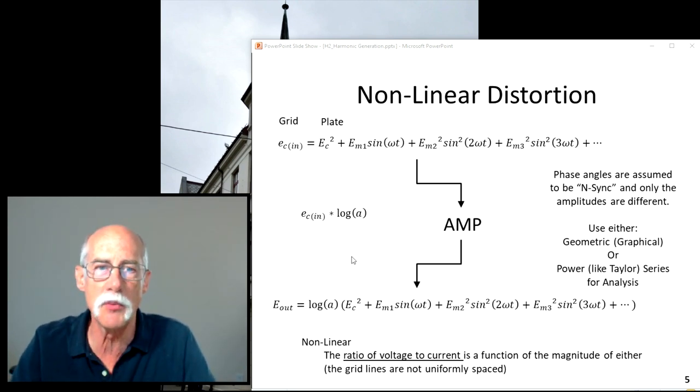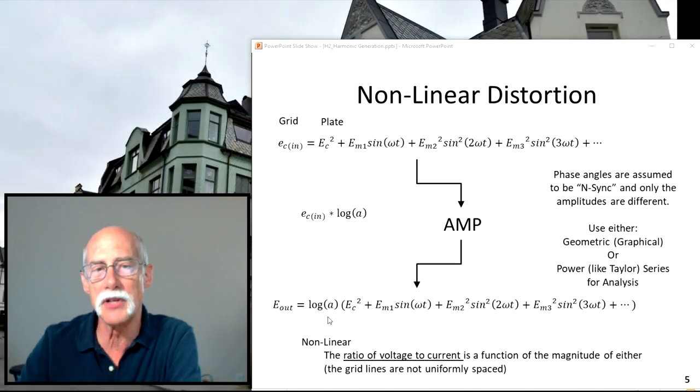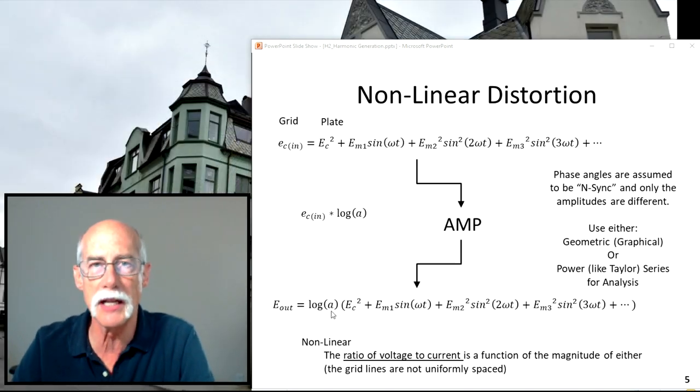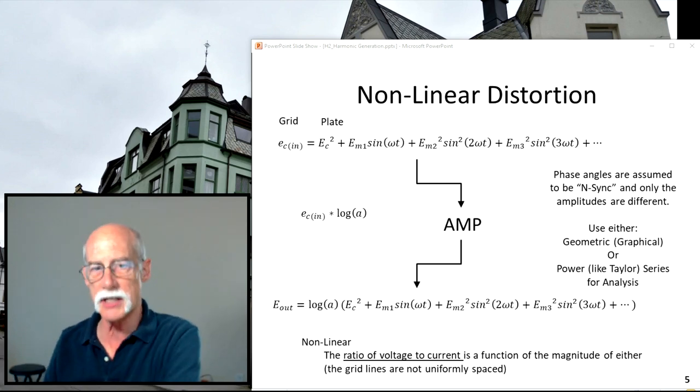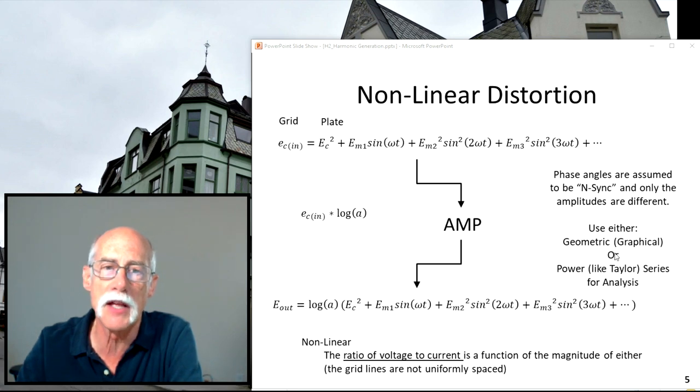So while we're in sync, we still get distortion. So the Eout is then equal to this log A, which we don't know what it is. And that's the goal of the video series is solve for log A times the terms of the equation. So we have the DC component, the fundamental, the secondary, and the third harmonic.